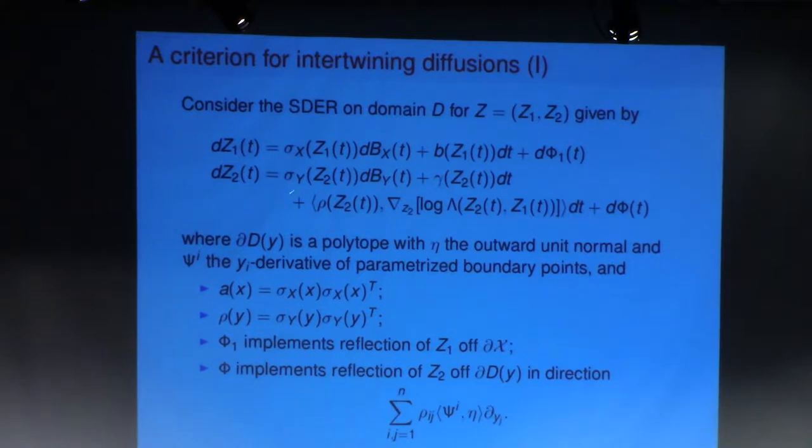Okay, now for Z2, the second coordinate, I take the same driving terms as for Y, and then I add this correction term, some drift, which somehow should correspond to the push from reflection off X. And third, I have actual reflection off X.